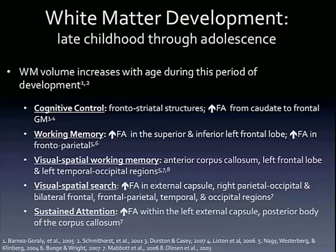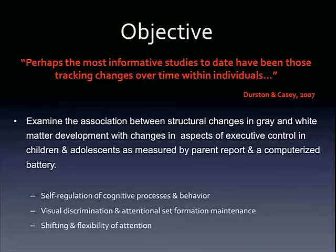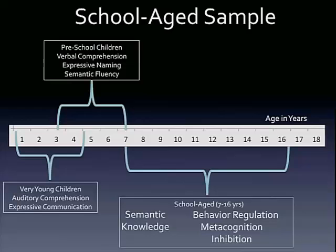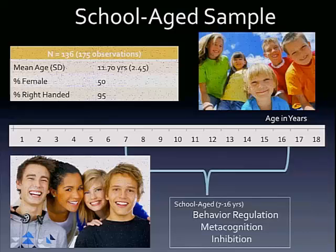This type of information is necessary in order to quantify subtle changes in white matter organization with maturation and to relate those changes to both behavior and cognitive changes over time. The objective for these analyses is to examine the role of cortical development and white matter connectivity in the development of different aspects of executive control. With the measures we pulled for these analyses, we'll be focusing on more specific aspects of executive functioning. This is the same school-aged children that Jessica just presented on — I'll just be addressing different measures.